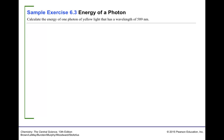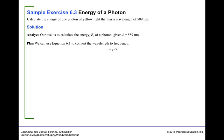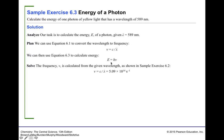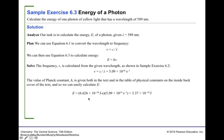Calculate the energy of a photon of yellow light with a wavelength of 589 nanometers. Our task is to calculate the energy using E = hν, but first we need to convert wavelength to frequency using the same equation as before. We obtained the frequency in the previous example. Now we multiply that frequency by Planck's constant to obtain the energy of this yellow light photon.